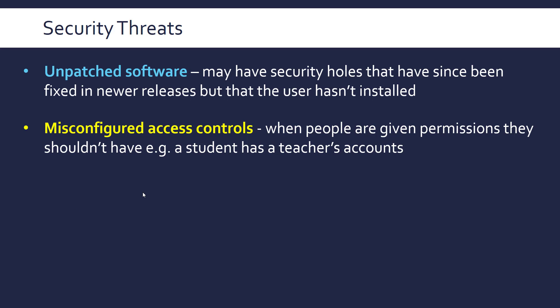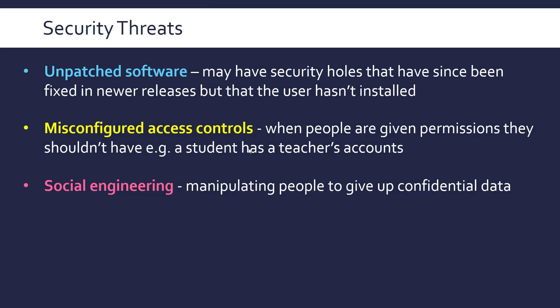Another threat examiners like to hear about is misconfigured access controls or access rights. This is about having different permission levels — for example, administrators can do more than basic users. In a school, students have fewer rights than teachers, and IT technicians have even more rights than teachers. If these get misconfigured — like a student accidentally getting a teacher's account — this can cause serious problems.